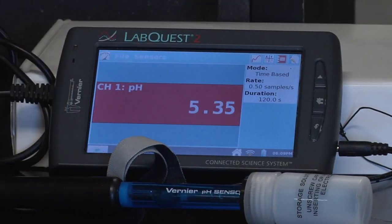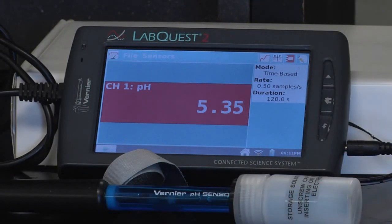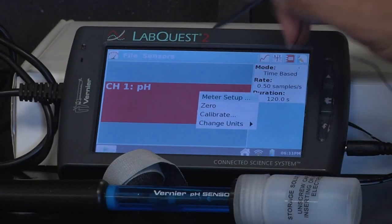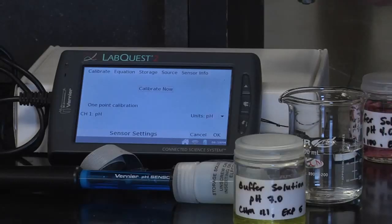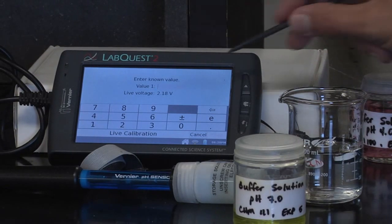Once you plug it in, it will begin reading pH. In order to calibrate our sensor, we're going to have to touch the screen and then select calibrate. Calibrate now button, which will take us to this screen.